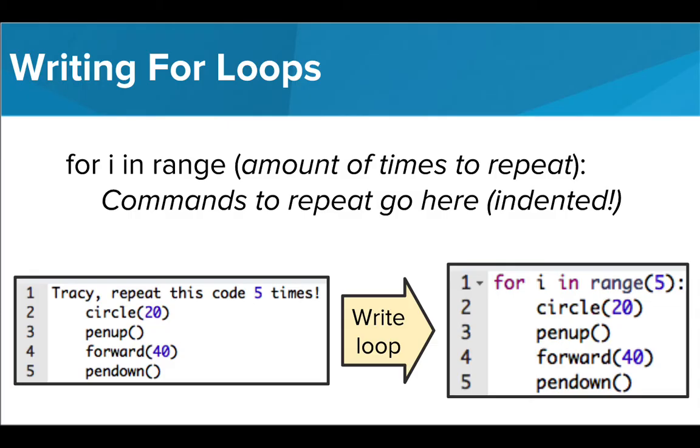Let's look at our caterpillar example. We want Tracy to put her pen down, draw a circle, lift her pen up, and move forward. And we want her to do this sequence five times. We write this code by using for i in range 5 with a colon, and then writing all the commands we want her to repeat indented below it.